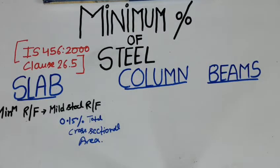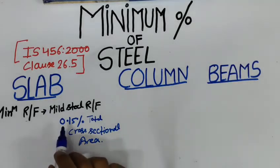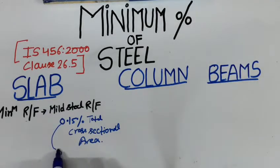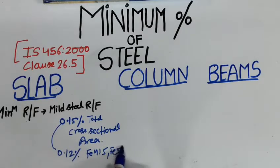However, this value can be reduced to 0.12% only when high strength deformed bars or welded wire fabric bars are used, other than the mild steels like Fe415, Fe500 type elements.